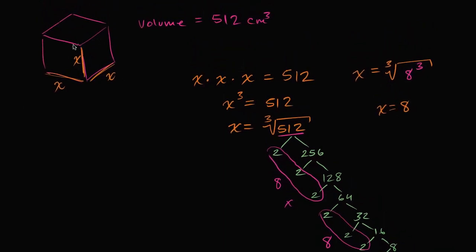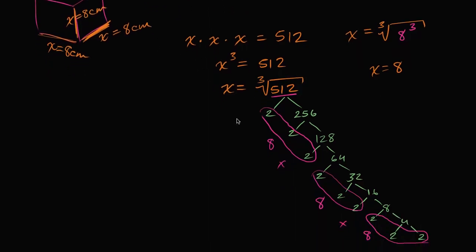So if the volume here is 512 cubic centimeters, each dimension is going to be 8 centimeters. So x is equal to 8 centimeters. This is equal to 8 centimeters. I'm just writing the units now. This is equal to 8 centimeters, and we're done. But if you didn't know offhand that 8 to the third power is 512, this is a reasonable way of coming to that conclusion. Anyway, hopefully that helped.